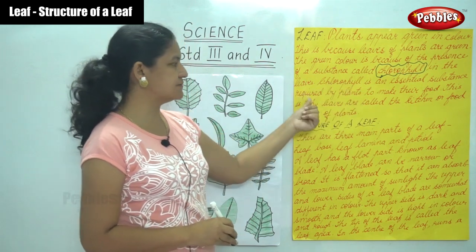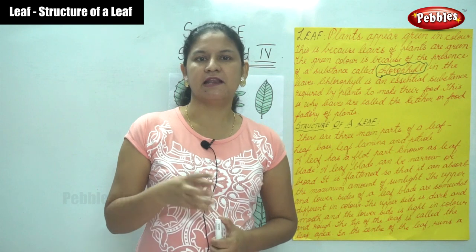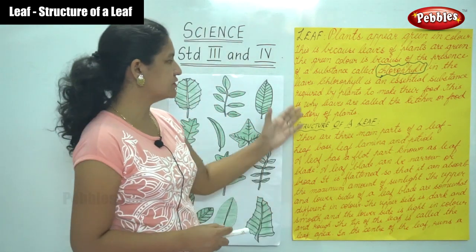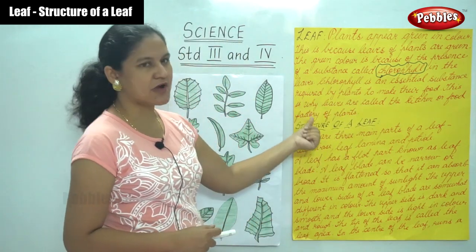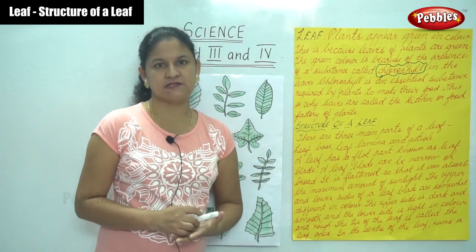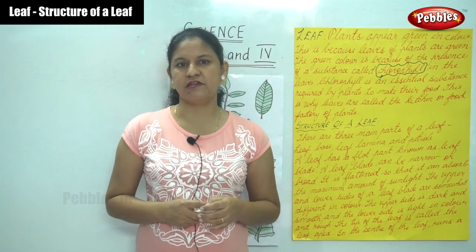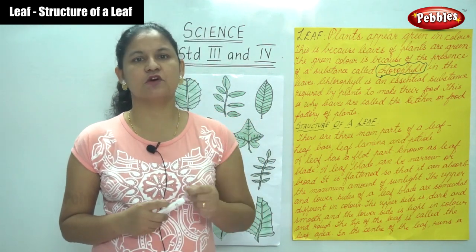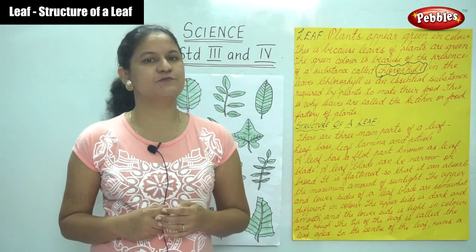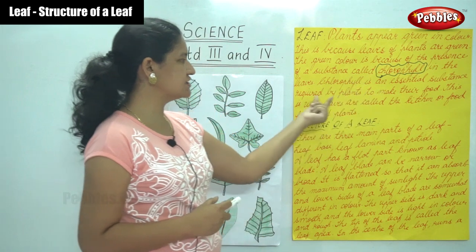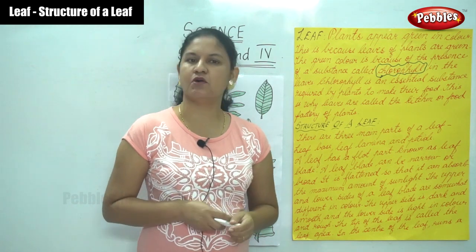Chlorophyll is an essential substance required by plants to make their food. The presence of chlorophyll in the leaves allows the leaves to make their food. This is why leaves are called the kitchen or food factory of plants.